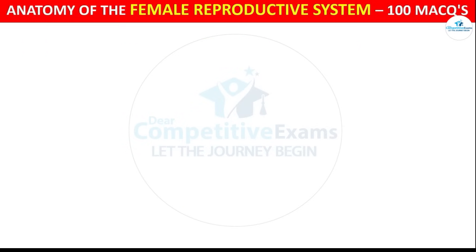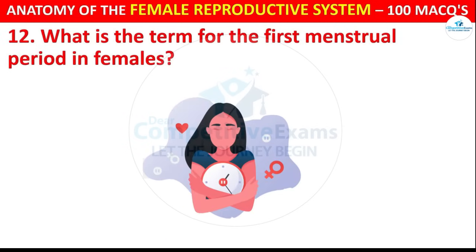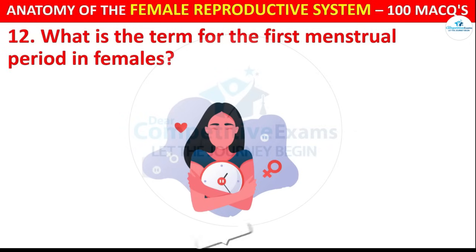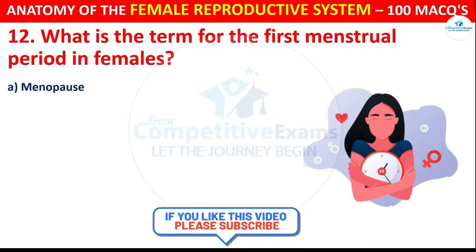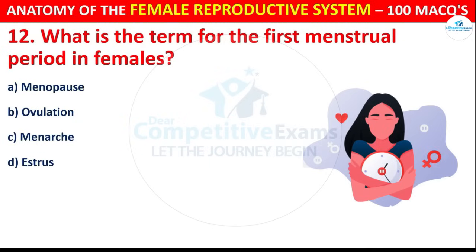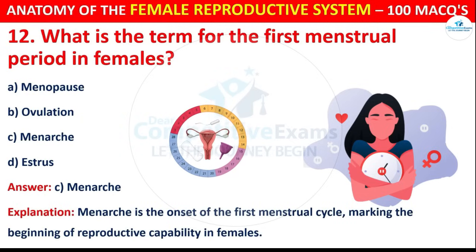Question number 12: What is the term for the first menstrual period in females? Options are: Menopause, Ovulation, Menarche, or others. The correct answer is C, i.e. Menarche. Menarche is the onset of the first menstrual cycle, marking the beginning of reproductive capability in females.